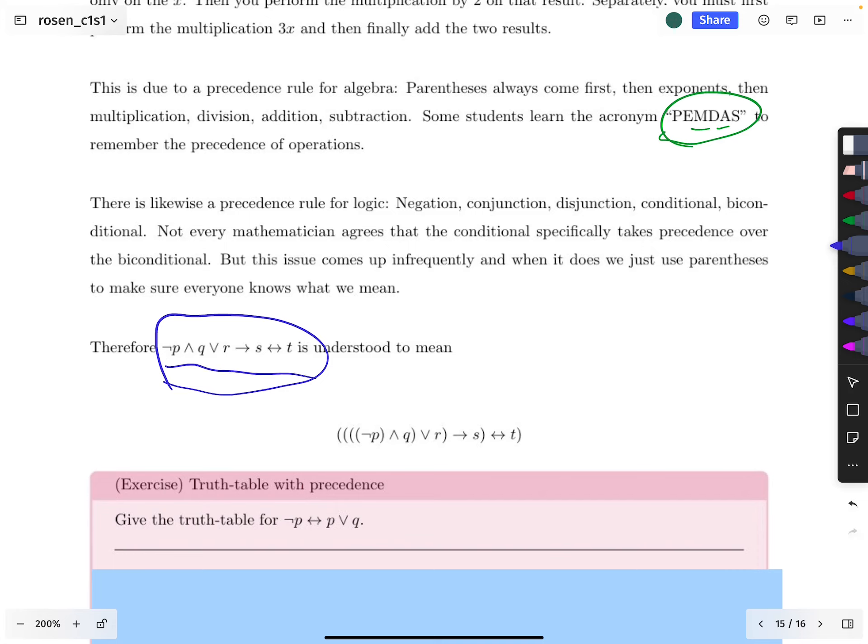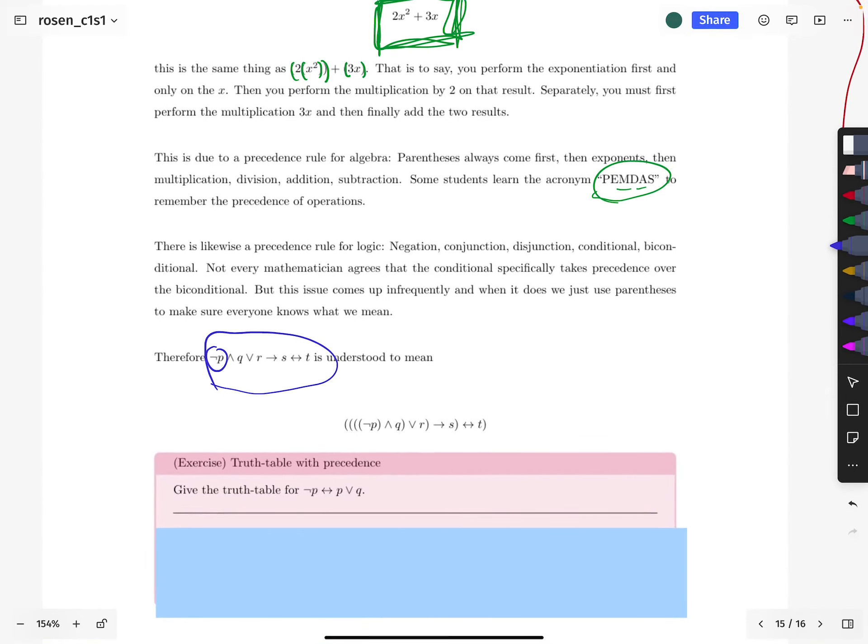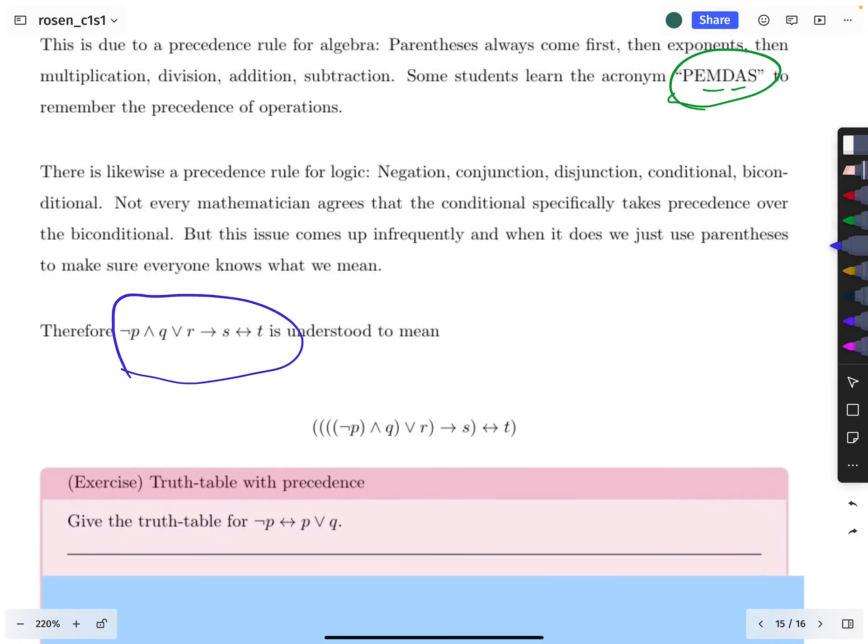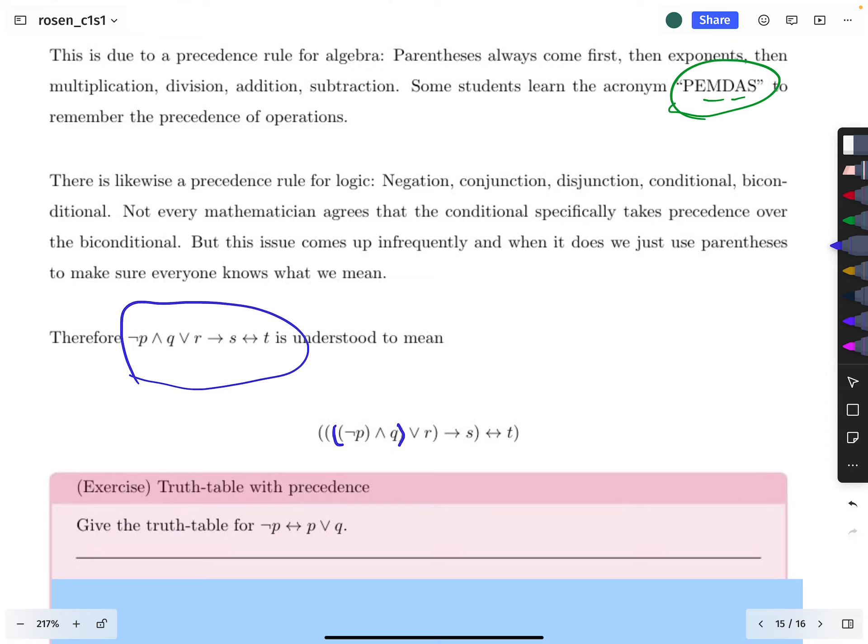But anyway, so if we were to put parentheses on this to make it equivalent to that, then we'd put parentheses on the negation P, then next would come the conjunction, right? That has the next earliest binding order. And then we would put a parentheses for the disjunction after that. So that's why like these parentheses, parentheses, I think right there. No, there. Anyway, so, or yeah, yeah. So those are the parens to encapsulate the conjunction.